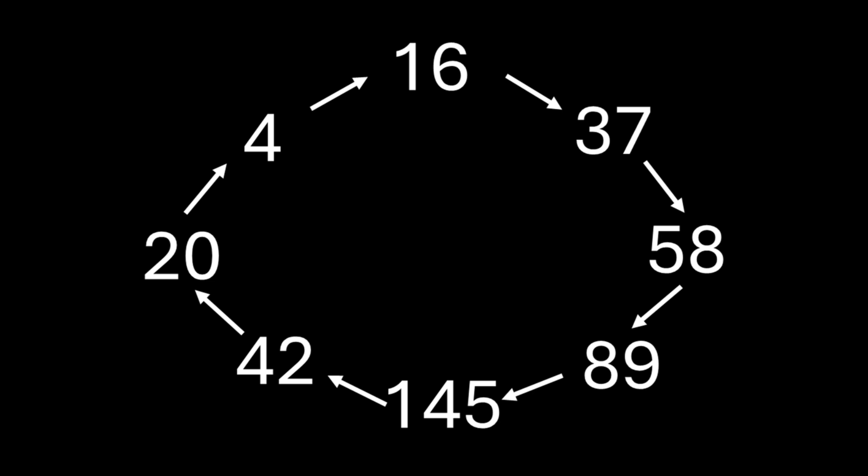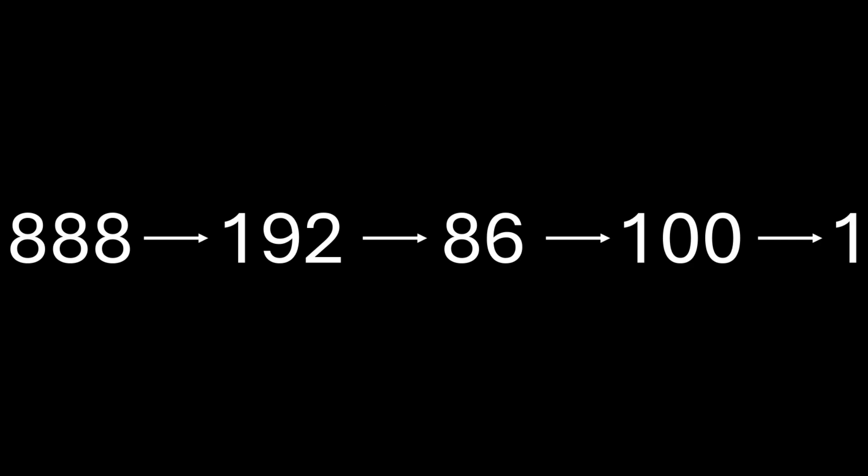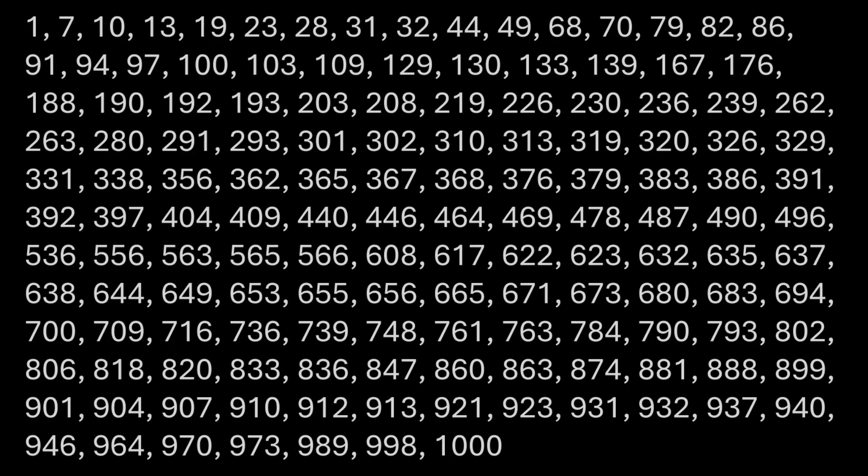These numbers that never reach one are called unhappy numbers when working in base 10. All unhappy numbers eventually fall into the same cycle involving the number four, and these are all happy numbers.